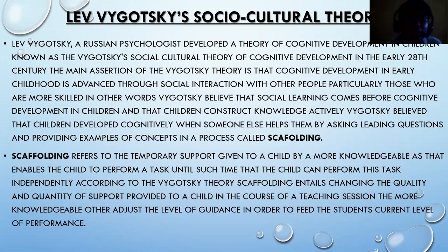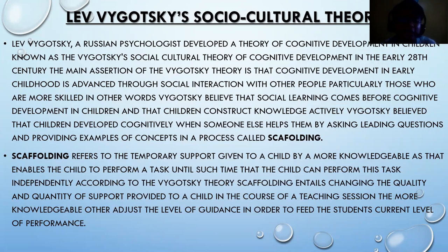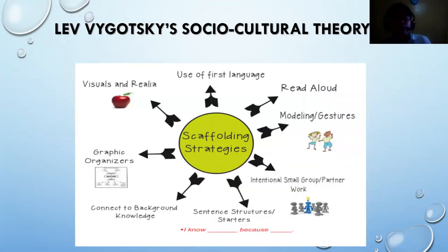Vygotsky believed that children develop cognitively when someone helps them by asking leading questions and providing examples of concepts — a process he coined as scaffolding. Scaffolding refers to the temporary support given to a child by a more knowledgeable other, enabling the child to perform a task until such time that the child can perform it independently. According to Vygotsky, scaffolding entails changing the quality and quantity of support provided to a child during a teaching session — the more knowledgeable other adjusts the level of guidance to match the student's current level of performance. Scaffolding strategies include using the first language, reading aloud, modeling with gestures, and creating small peer groups or partner work.